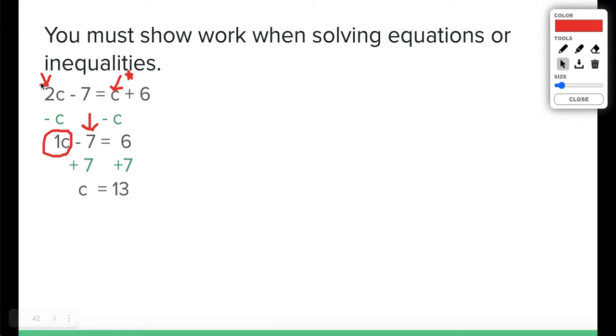What does that mean? That means if I went and plugged in a 13 anywhere I see a c in our expression, I would be able to get both sides equal to each other. Let me show you. I'm going to take out the c after the 2 and place a 13. And then I'm going to take out the c over here on the right and replace that with a 13. Let's see if both sides are equal to one another. 2 times 13 is 26. 26 minus 7 is 19. 13 plus 6 is 19. Does 19 equal 19? Yes, that's true. So if that was a true statement, that means my answer works.